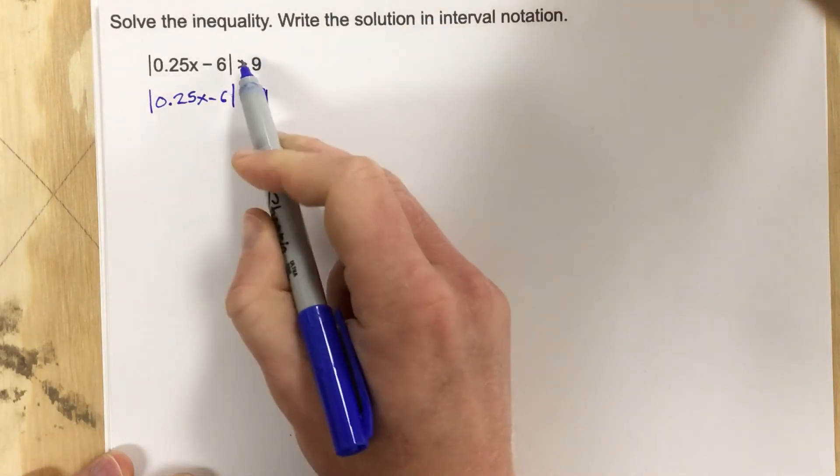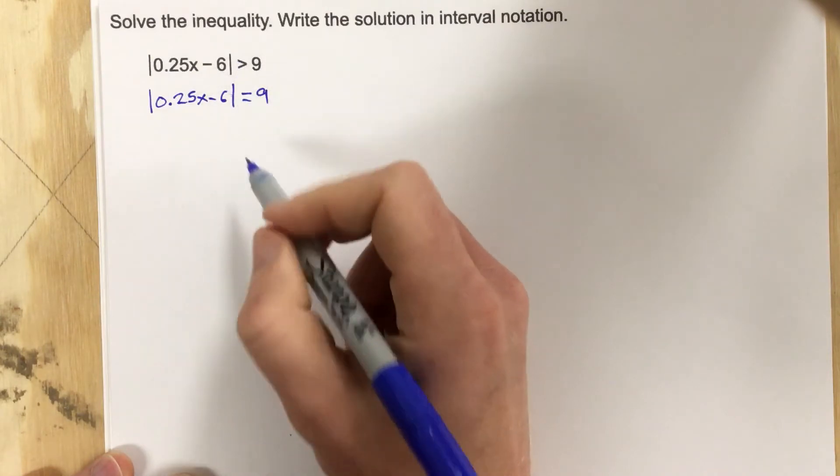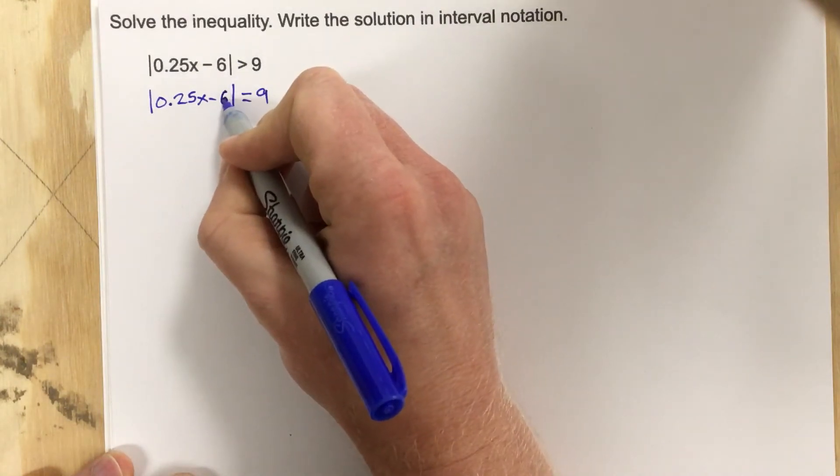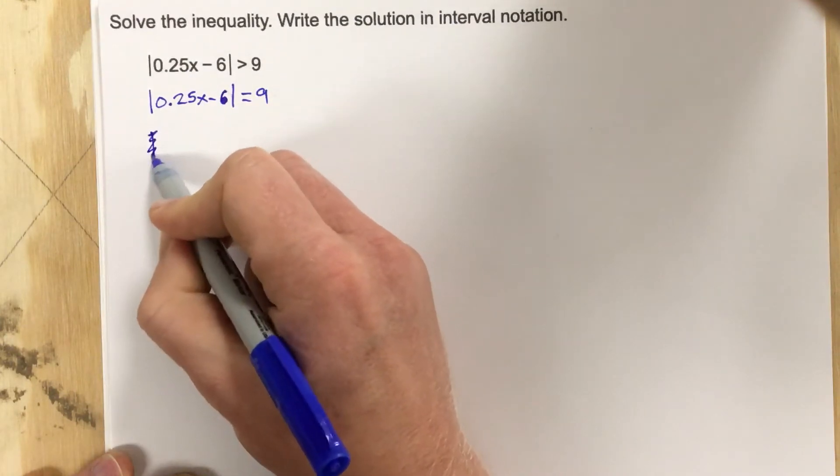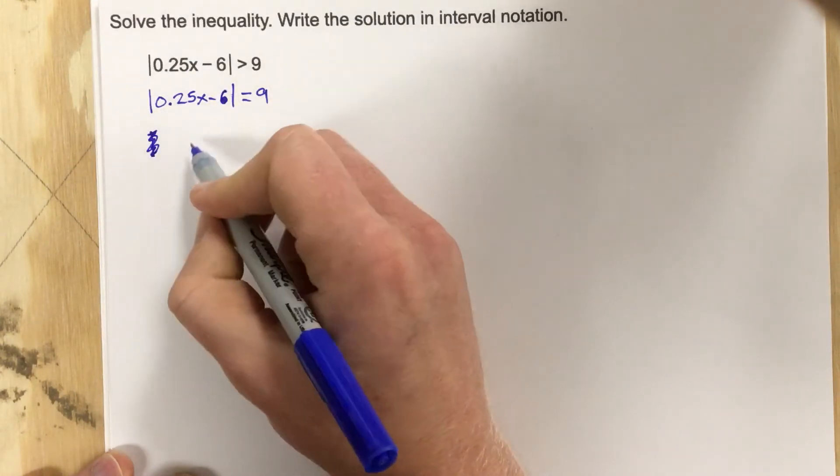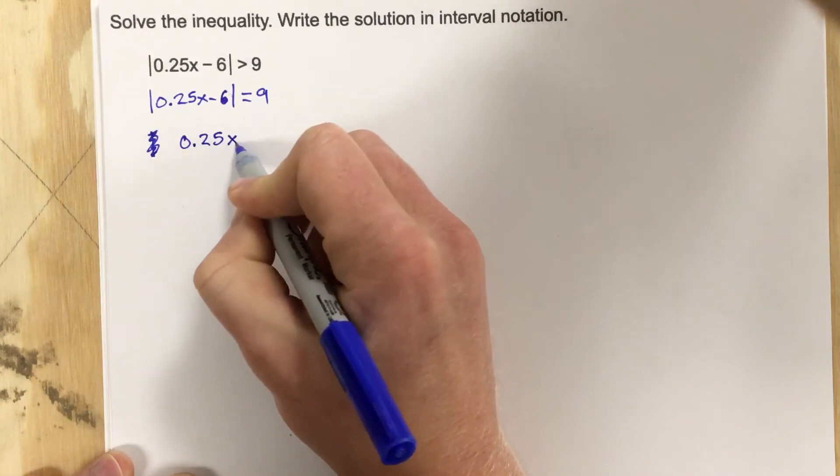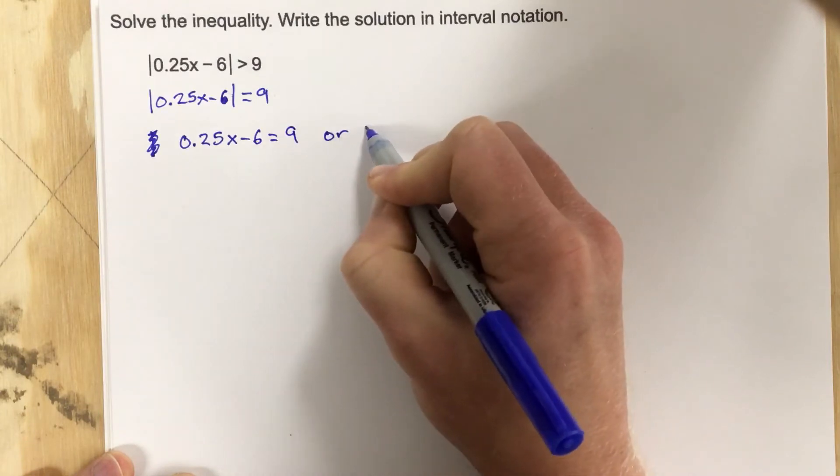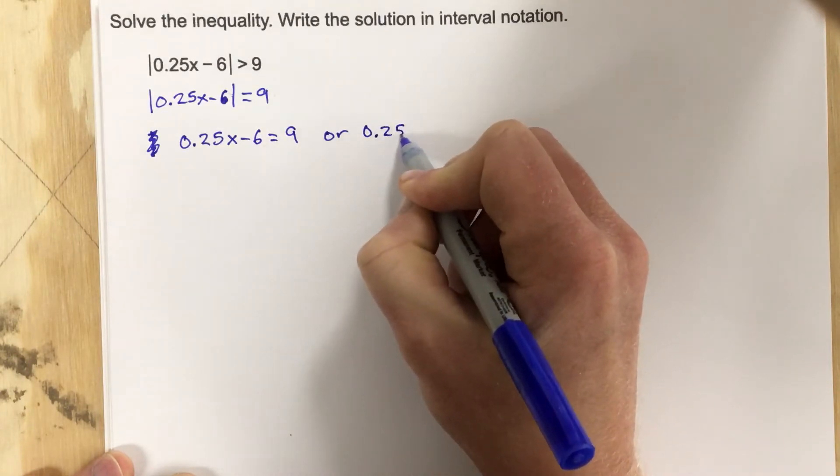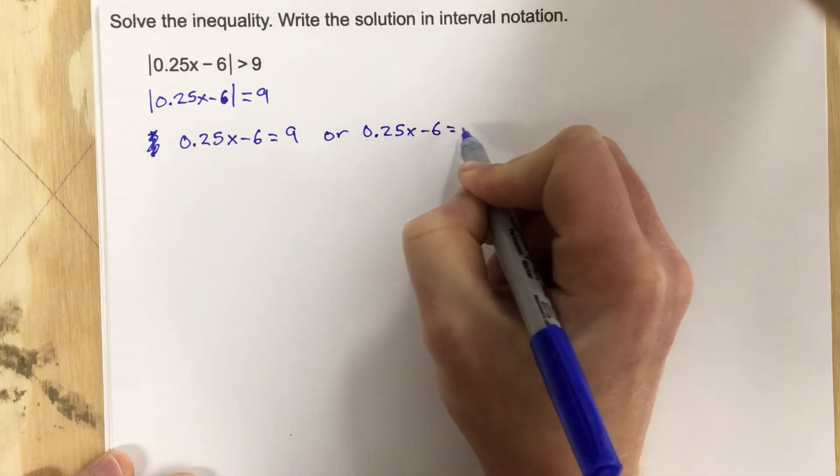So I start out by switching the inequality sign to the equals. And now I'm going to say, or I don't need the absolute value, sorry. I'm going to split this down and say that 0.25x minus 6 equals 9, or it's got to equal negative 9.